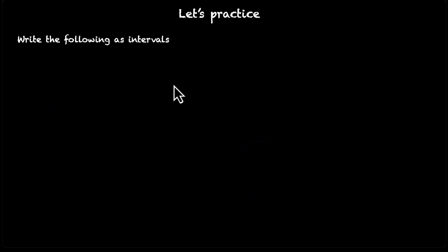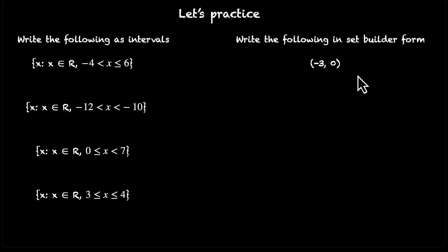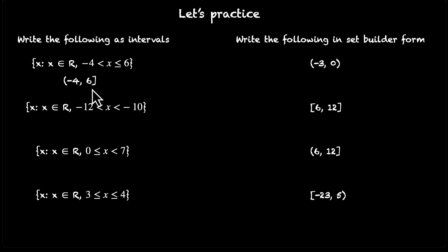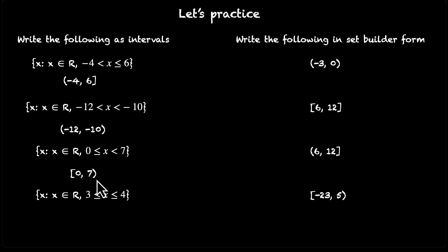Now let's practice what we have learned. Write the following as intervals and in set-builder form — take a minute and pause the video. For the first one, x is greater than −4 and less than or equal to 6. We're including 6 but not −4, so open bracket for −4 and close bracket for 6: (−4, 6]. Next, numbers −12 and −10, neither included: open brackets for both, (−12, −10). Then 0 included and 7 not included: close bracket for 0, open for 7 — [0, 7). Finally, 3 and 4 both included: close brackets for both, [3, 4].